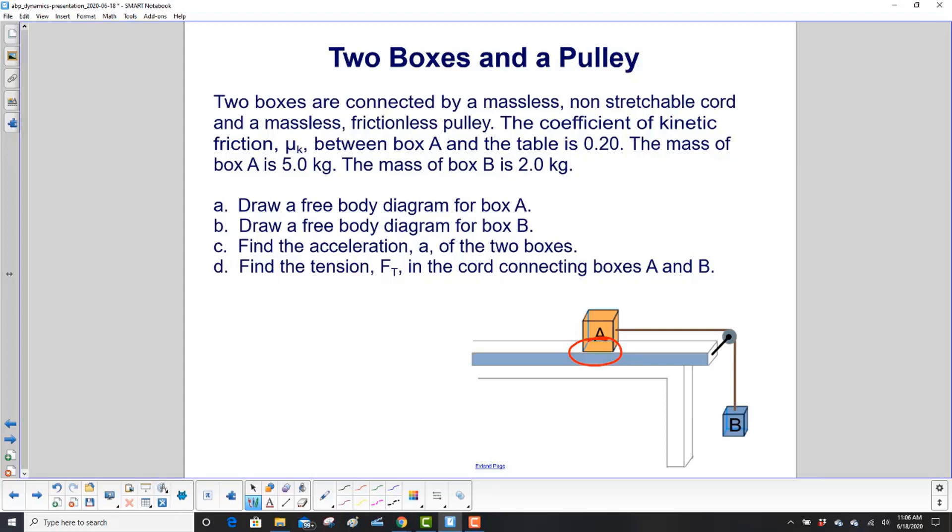The mass of box A is 5 kilograms. The mass of box B is 2 kilograms. Draw a free body diagram for box A, then B, then find the acceleration of the two boxes, and finally find the tension in the cord connecting boxes A and B.